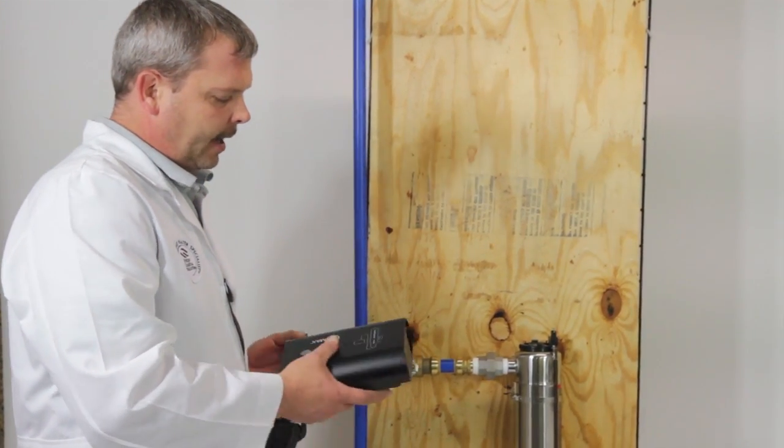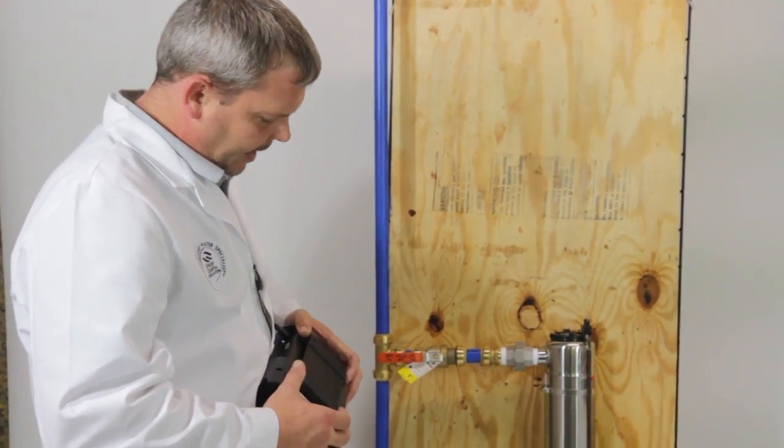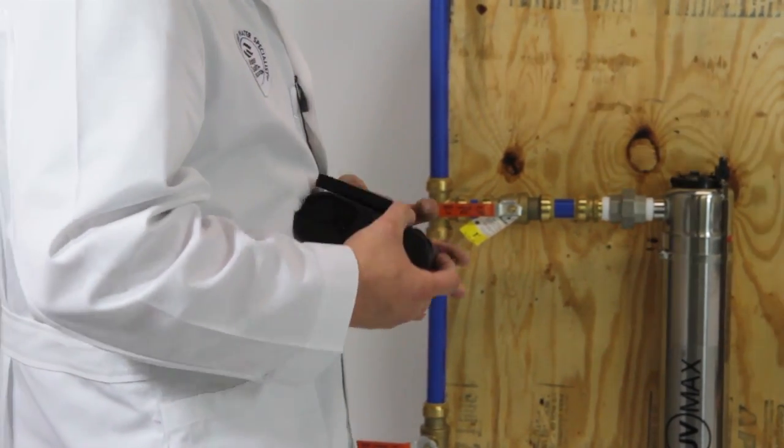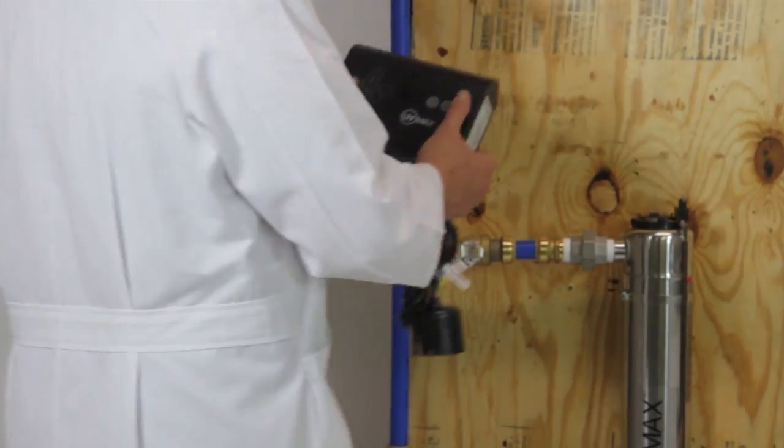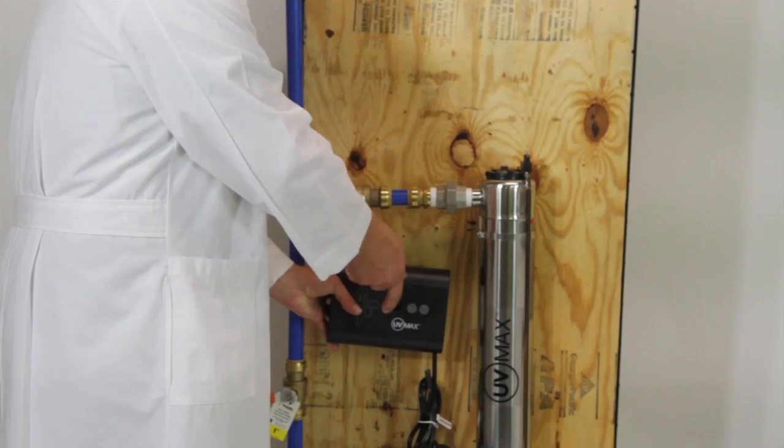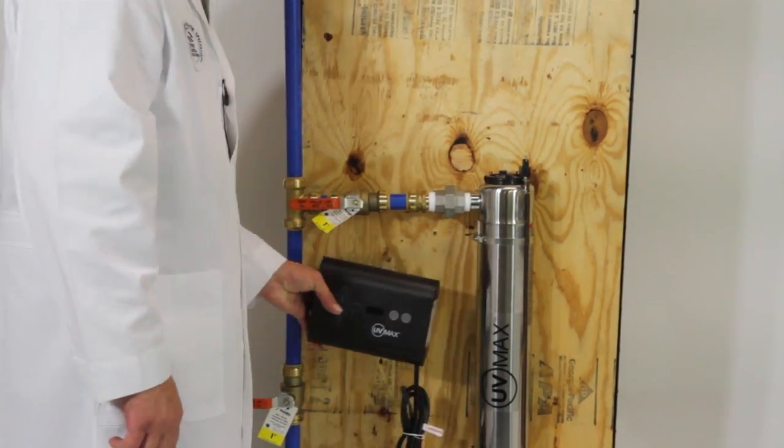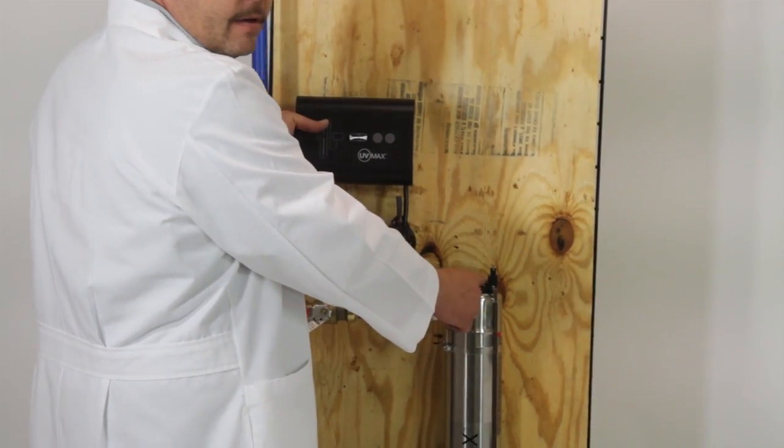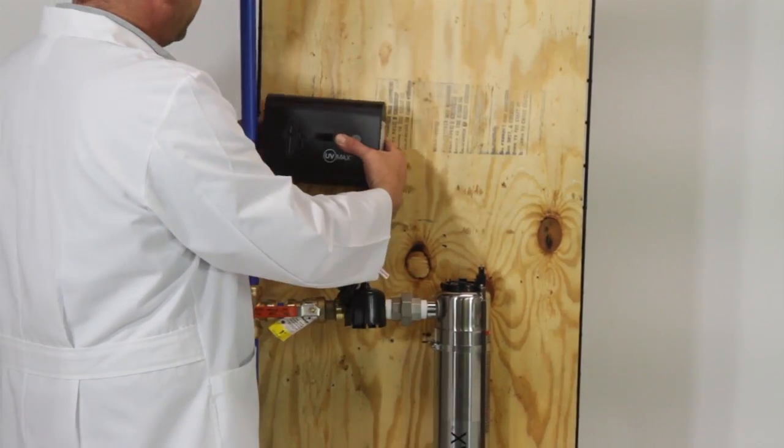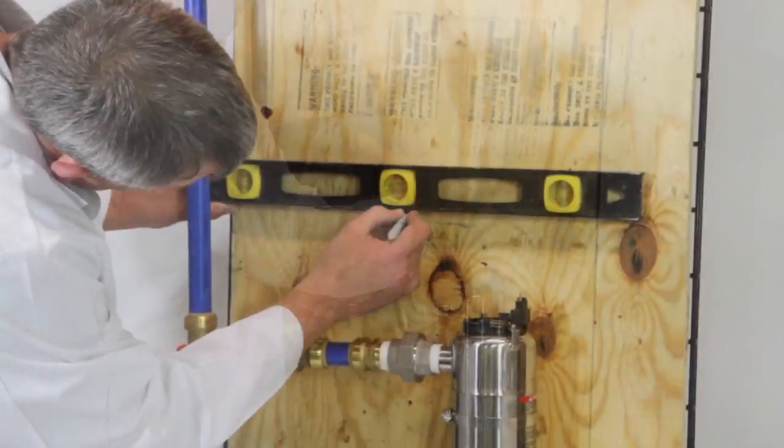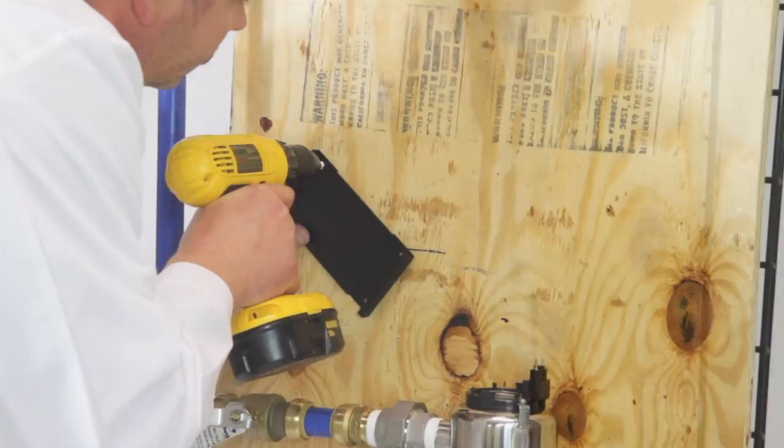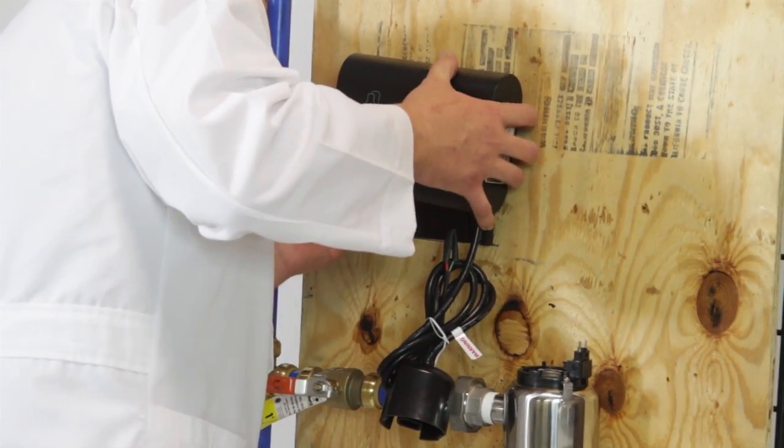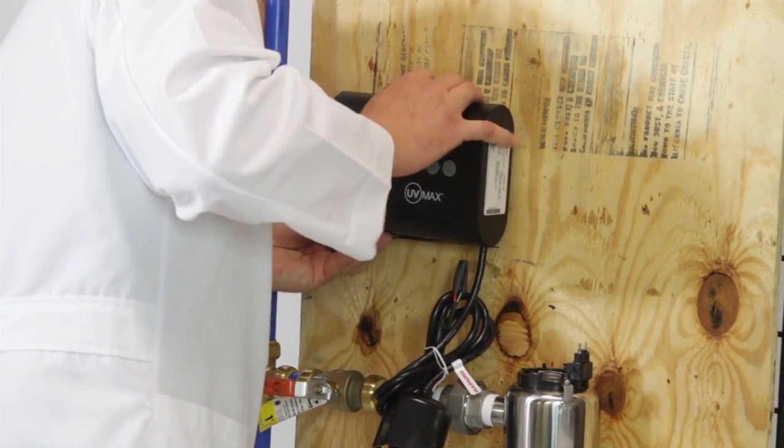Once we have the plumbing complete and we have everything secured and tight, then we're going to mount our ballast. It has a bracket that will slide off that we're going to mount to the wall. We don't want this down low because if anything drips, it leaks on it and burns up the ballast. We want it above the plumbing as much as possible, but we don't want to put it over top of the bulb chamber so we can't get the bulb out. For this application, I'm going to mount it basically right up in here. You can use a level and your proper fasteners to mount this actual bracket. Once your bracket is mounted, you can slide your ballast into the bracket and it's securely mounted to the wall.